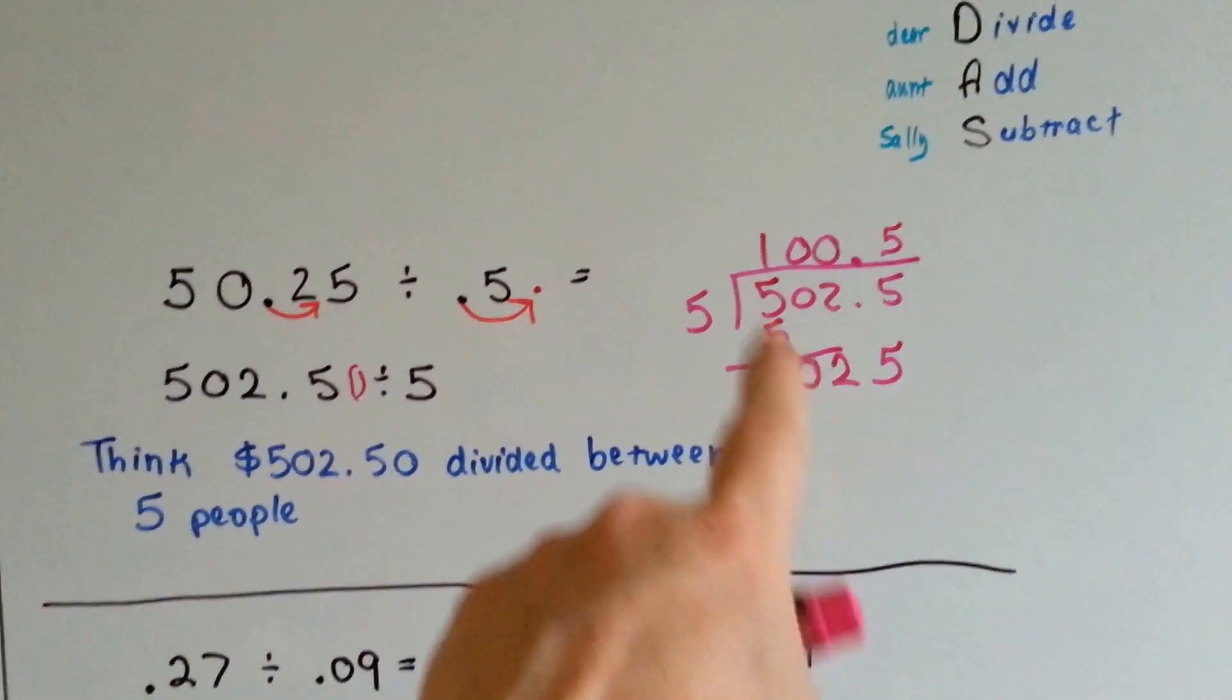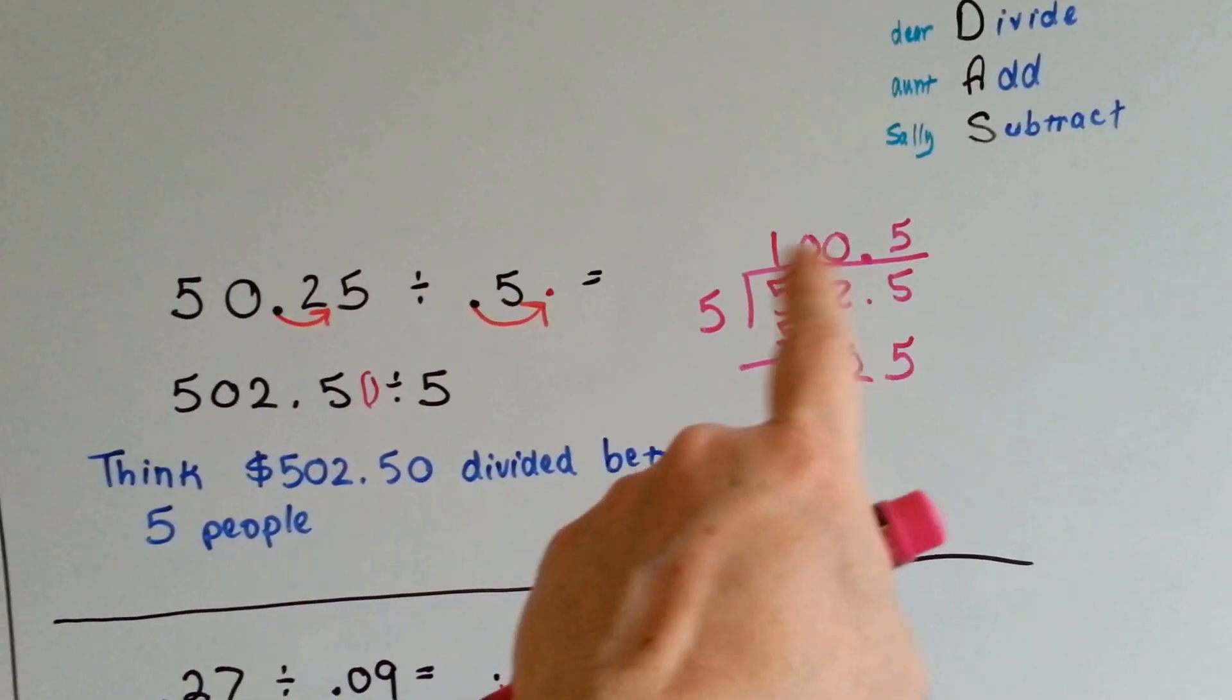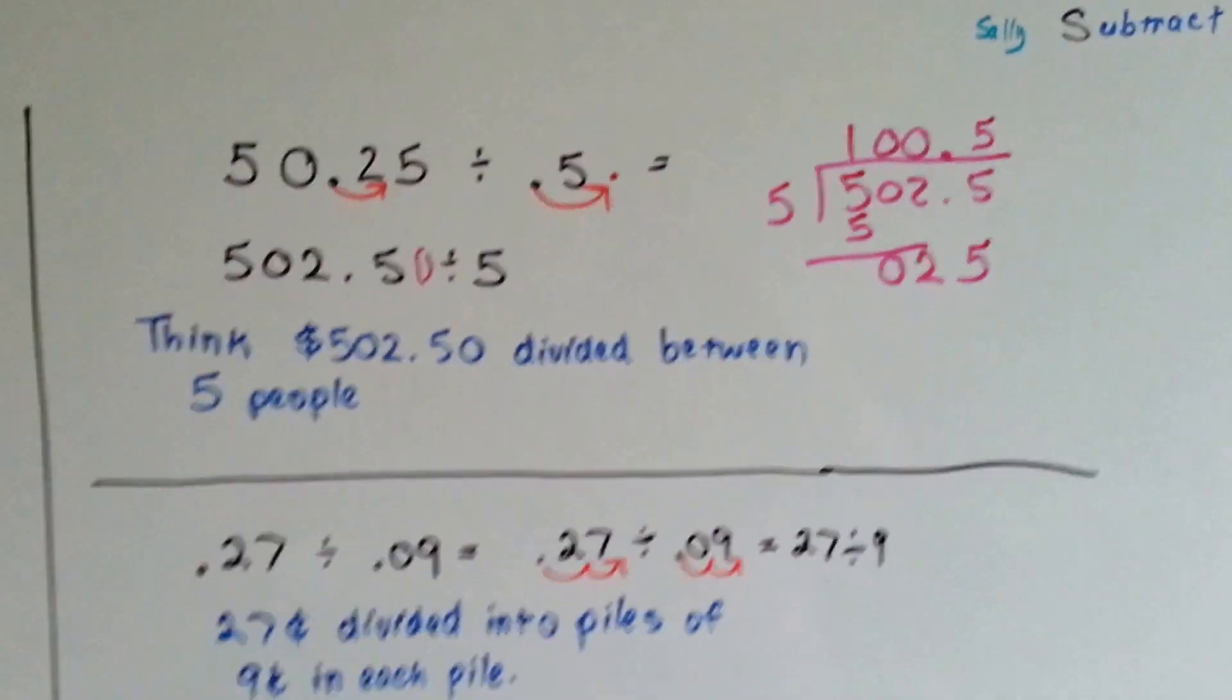So, do you see what happened when we couldn't put the five into it? We just put zeros up there until we could put a number into it.